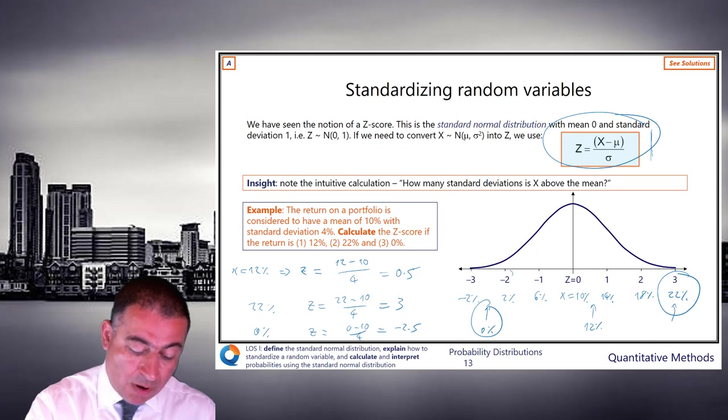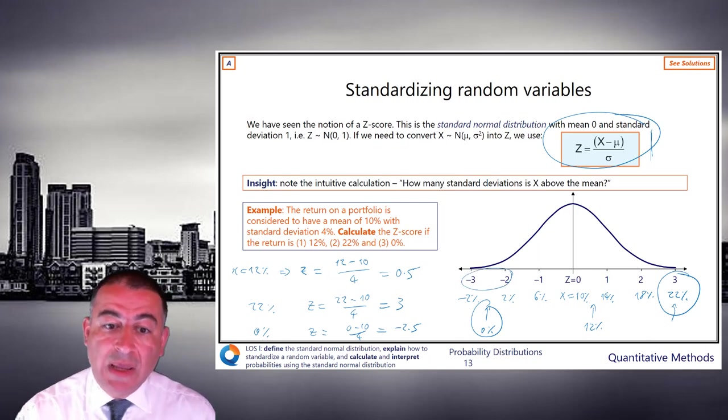And not surprisingly, that's minus 2 and a half. And we can see on the diagram, we're halfway between minus 2 and minus 3. So that's how we standardize a random variable. Hopefully, a reasonably straightforward question should that come up.